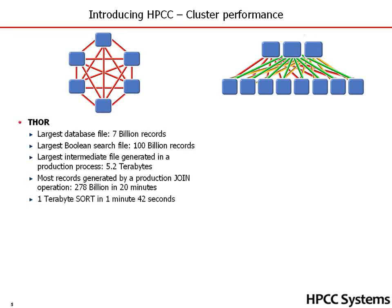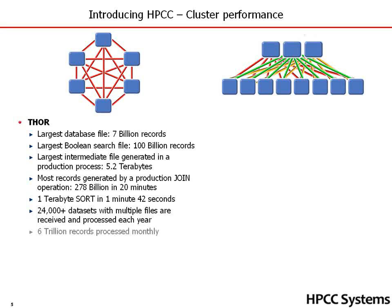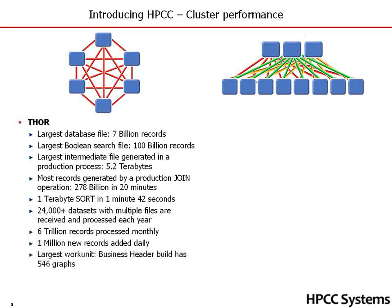A 1 terabyte sort in 1 minute and 42 seconds. More than 24,000 data sets with multiple files are received and processed each year. 6 trillion records are processed every month, and 1 million new records are added daily. The largest work unit is a business header build with 546 graph processes, and the longest process is the person header, which runs for 60 hours.